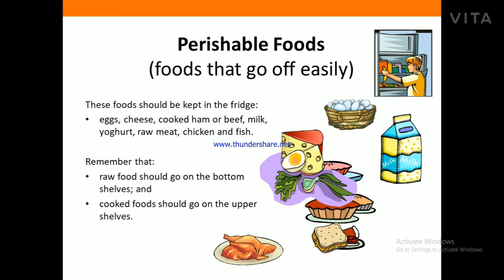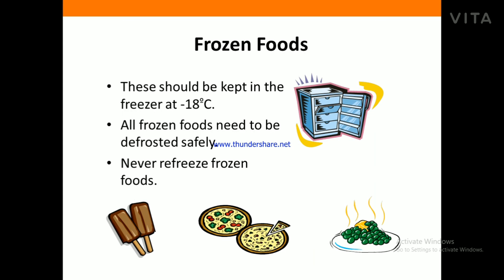Cooked food should go on the upper shelf. Do not keep any cooked food below raw food, because the water droplets from raw food will fall onto the cooked food and contaminate it. Frozen food should be kept in the freezer at minus 18 degrees Celsius. All frozen foods need to be defrosted safely — never refreeze frozen foods.